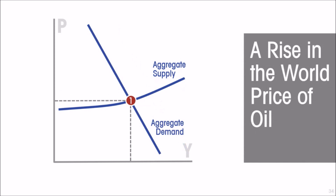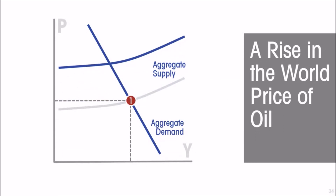Now let us look at a supply shock instead of a demand shock. If there is a rise in the world price of oil, and as most developing countries — and even many developed countries — are net importers of energy, then a rise in the world price of oil will show up as an upward shift in the aggregate supply curve, because it raises the cost of production in the economy by raising the cost of energy.